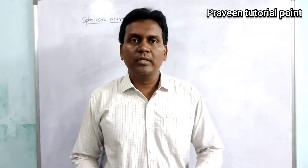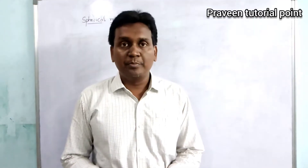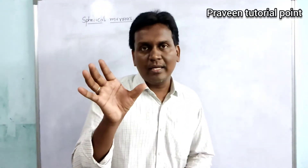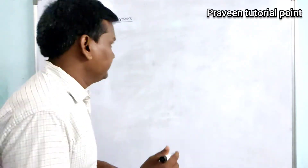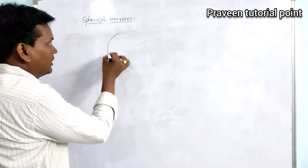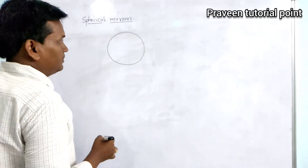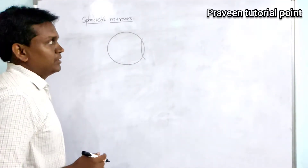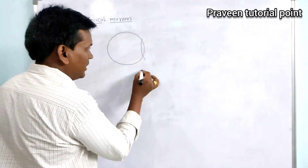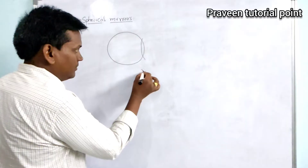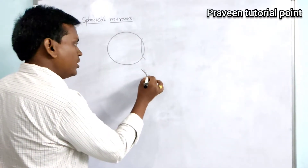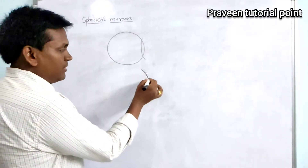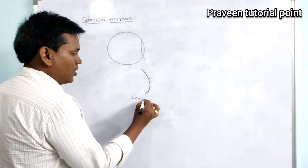Hello everyone, welcome back. In this session we are going to discuss about the spherical mirrors. Spherical mirrors are the small cut part of a hollow sphere. If you take a hollow sphere and cut it, that cut part is the spherical mirror. If the convex surface is silver coated, then we call that mirror a concave mirror.